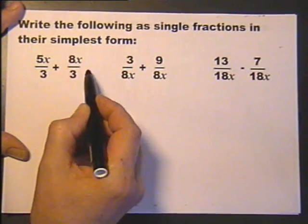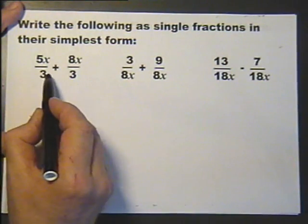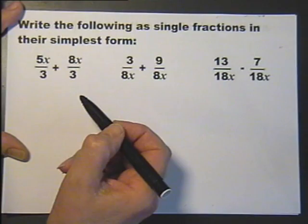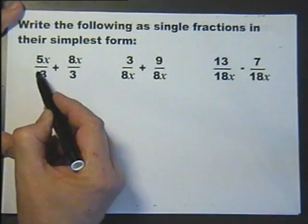As with addition and subtraction of ordinary fractions, the bottom numbers must be the same. If they're not, then you have to find the lowest common denominator, make them the same. But in this case, they are the same.